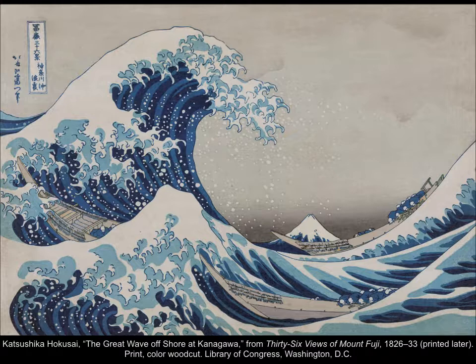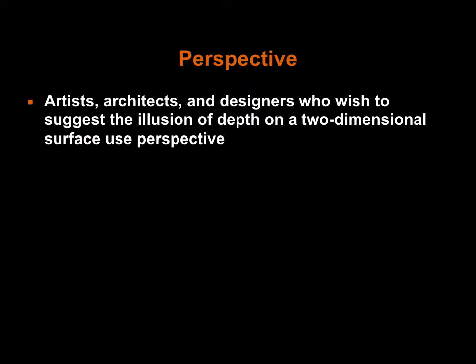Here we have the print The Great Wave off Kanagawa, created by Katsushika Hokusai in the 19th century. Hokusai has arranged the waves in overlapping fashion, with the wave closest to us in the foreground appearing smaller than the wave farther away in the mid-ground. The size of the large waves in the mid-ground appears especially menacing and dangerous when compared to the human figures in the canoes, who seem tiny in comparison and at the complete mercy of the ocean.